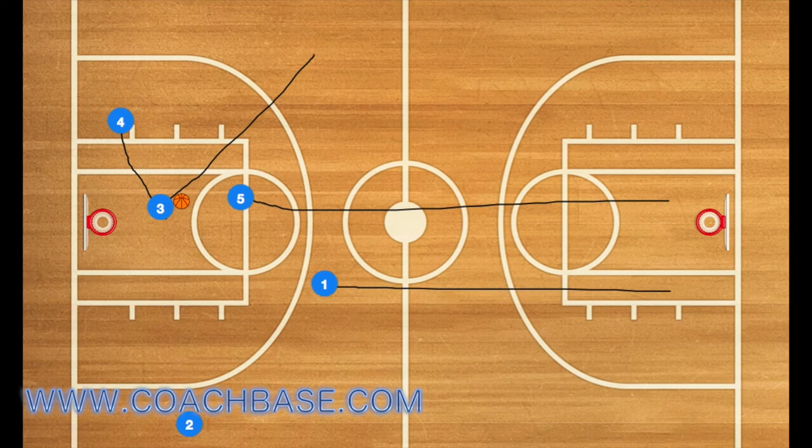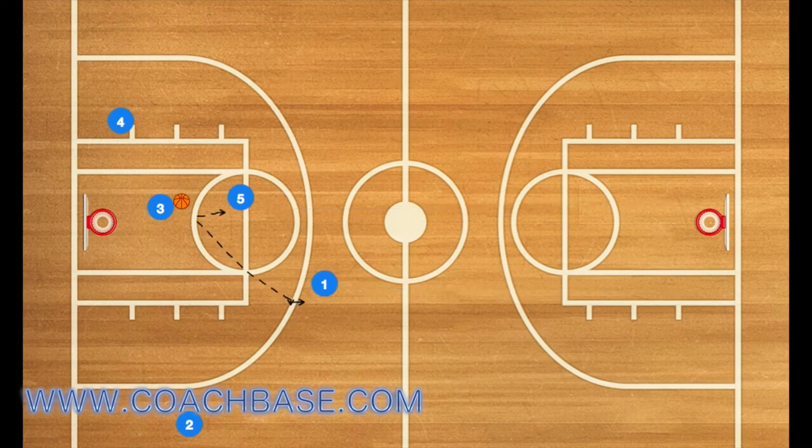At this time, 4 cleared out and 3 drove towards the rim, and he had 2 trailing players — 5 and 1. High school coaches usually teach passing to player 5 because he's the post player, and usually he'll have enough steam to get to the rim.